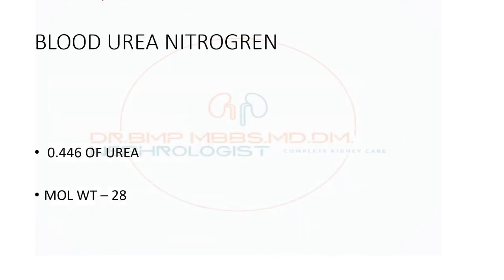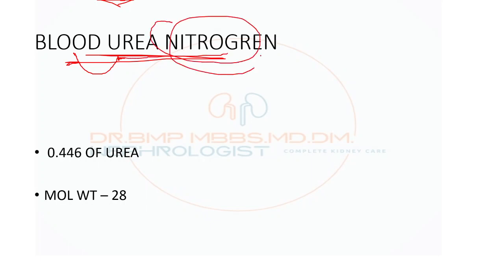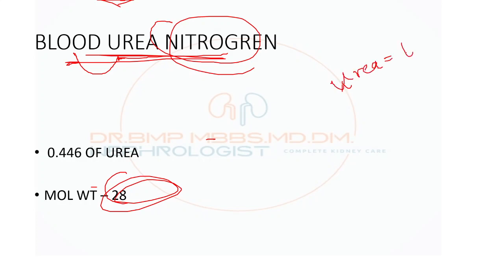Blood urea nitrogen — BUN — the name itself indicates it is urea measured in the form of nitrogen. It basically measures only the nitrogen present in the urea molecule. So the molecular weight of BUN is 28, whereas the molecular weight of urea is 60.